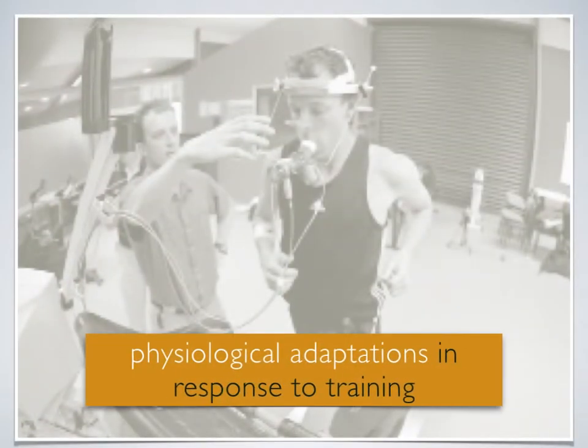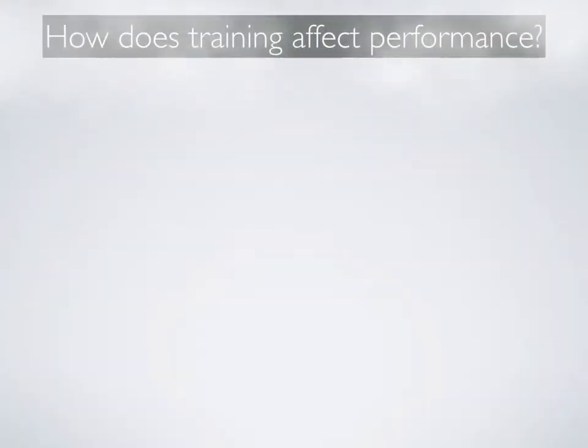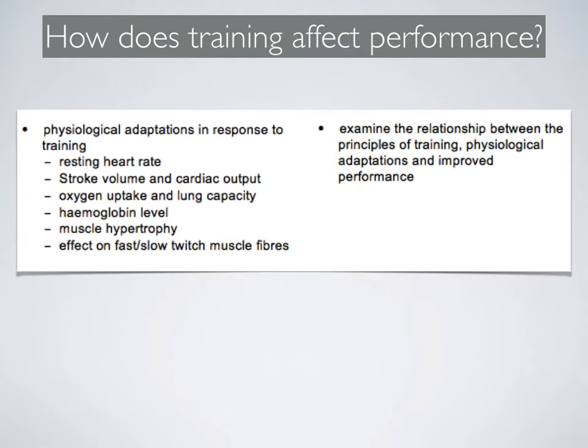This presentation will address the physiological adaptations in response to training. It will address the focus question: how does training affect performance? We'll focus primarily on the following physiological adaptations: resting heart rate, stroke volume and cardiac output, oxygen uptake and lung capacity, hemoglobin level, muscle hypertrophy, and the effect of training on fast and slow twitch muscle fibres. Throughout this presentation, you'll be asked to examine the relationship between the principles of training, physiological adaptations, and improved performance.